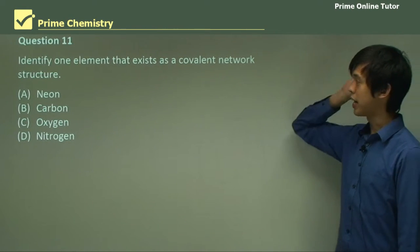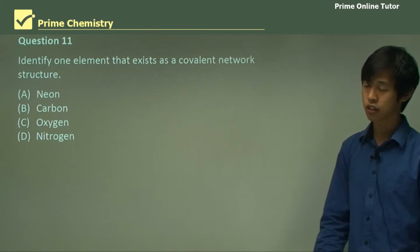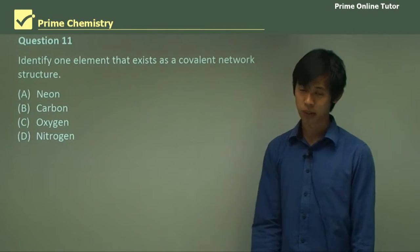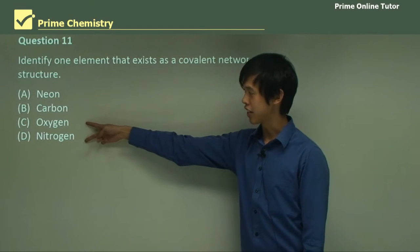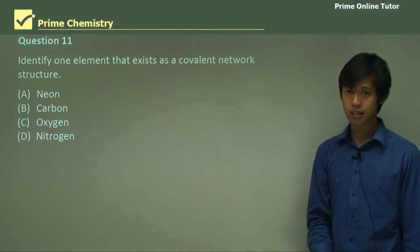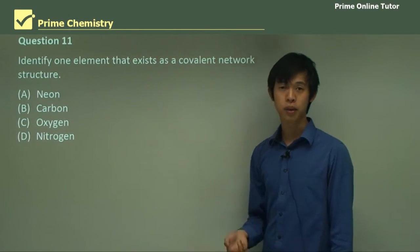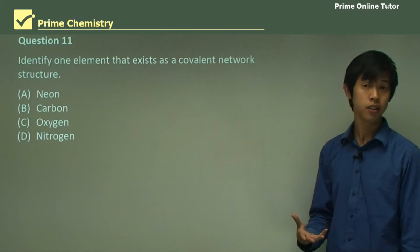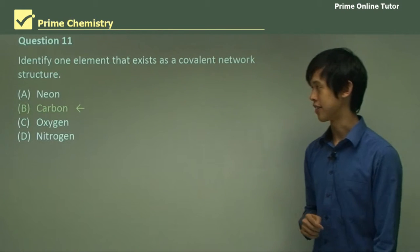So identify one element that exists as a network structure. So you've got neon, which is a noble gas, so it doesn't even bond. We know that oxygen and nitrogen are both molecular substances, so we know that it's neither C or D. But carbon can form a covalent network substance in diamond or graphite, so we know that B is our answer.